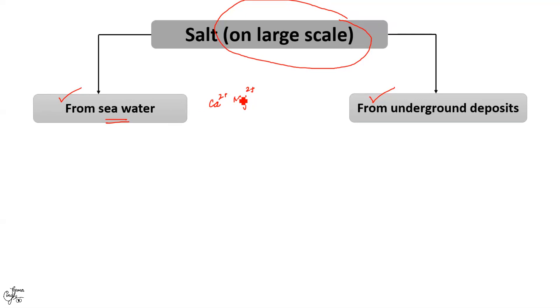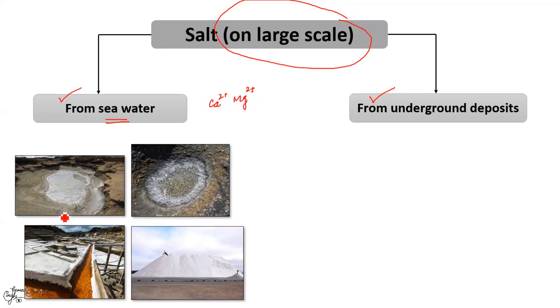For instance, the sea water is trapped in large shallow ponds and then allowed to stand there. The sun evaporates the water slowly and common salt along with other impurities is left behind. Thereafter the mixture is purified to get NaCl which is white crystalline solid.